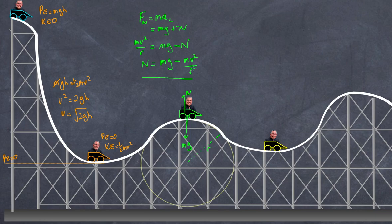In fact, if the radius gets a certain value such that mv squared over r equals mg, I will feel completely weightless at that point. Similarly, if I go faster, I get the same effect. If my velocity is fast enough or my radius is small enough, experiencing zero normal force means the cart could actually fly off the track because there's nothing pulling it down.